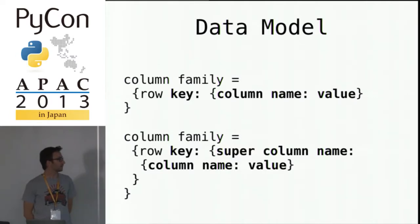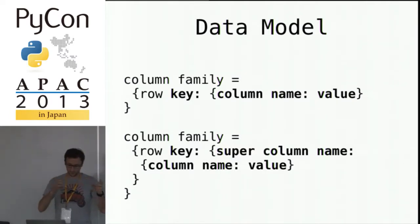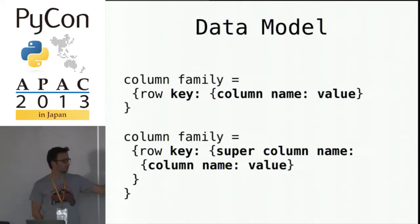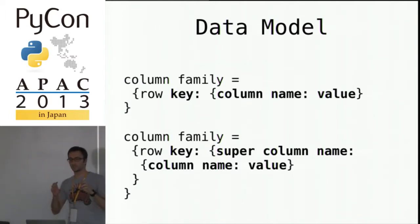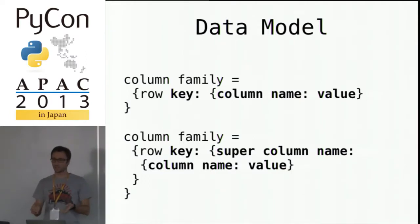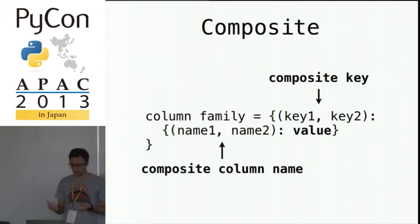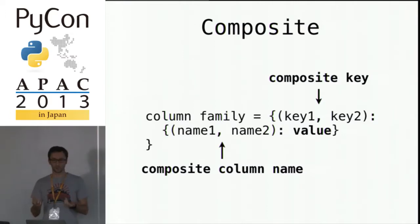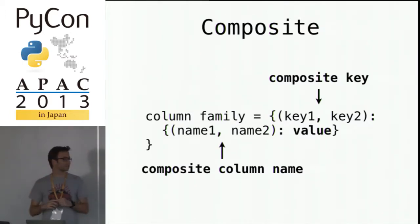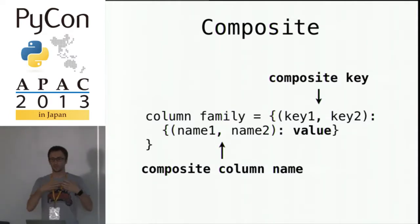If you take the Python representation of this data model: in each column family you have rows identified by a key, then the column name, and the column is identified by its column name and its value. If you have one more nested level, you have the super column name, column name, and value. In Cassandra, each value or key is actually bytes — represented as bytes in the database. If you want to enforce data types, you marshal your data into bytes stored in the database.